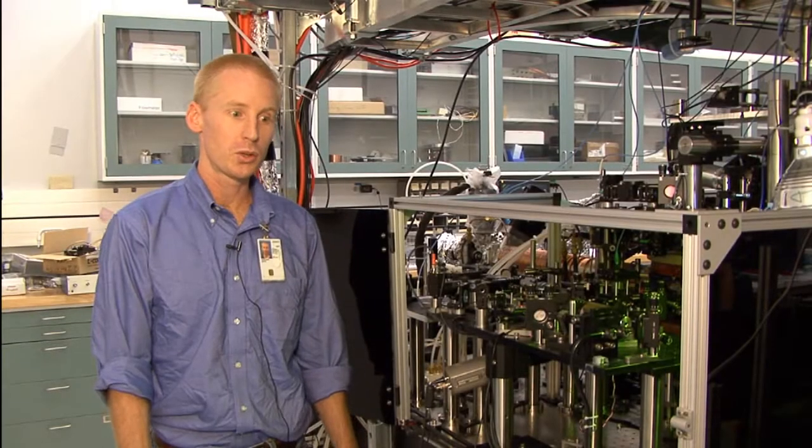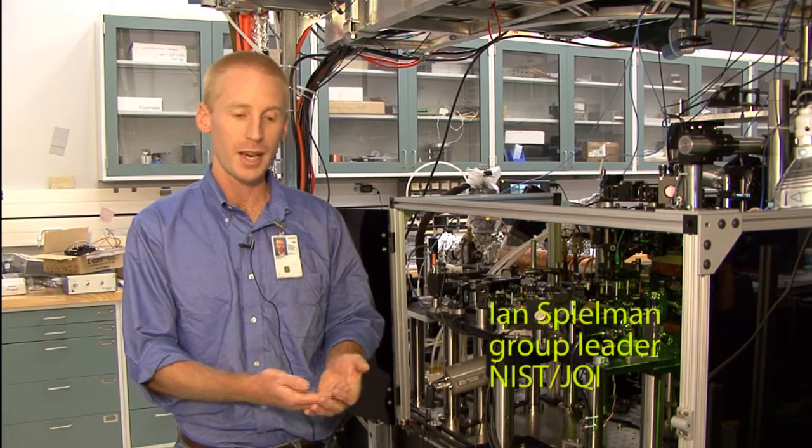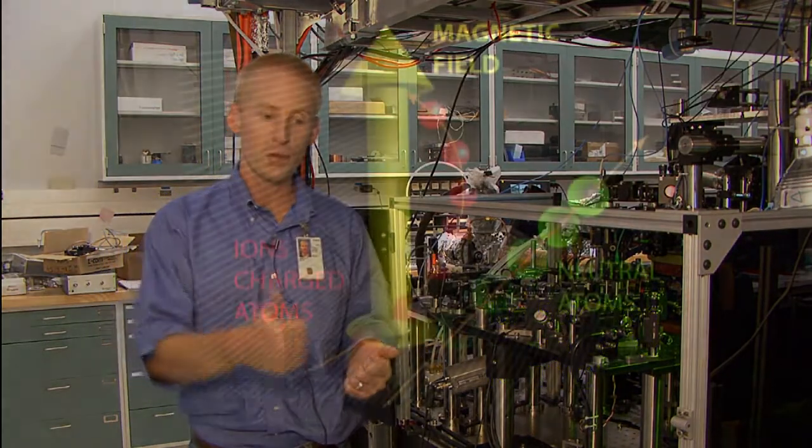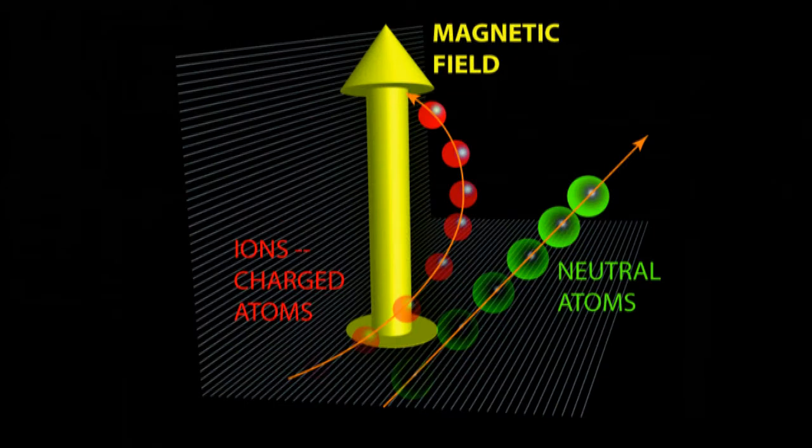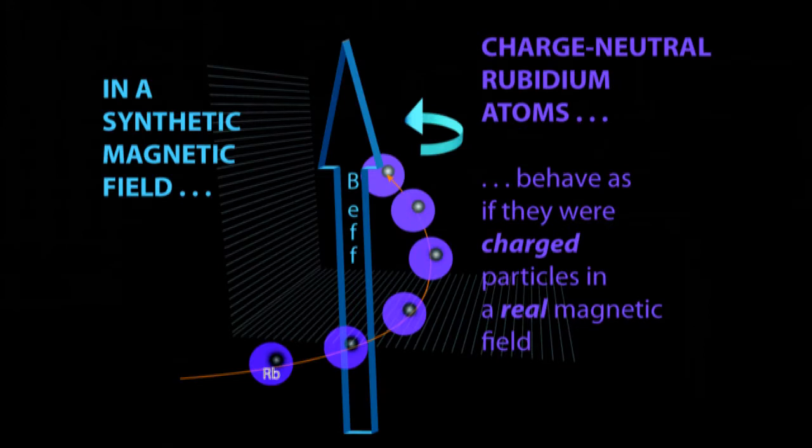What I'd like to tell you about today is how we take charge-neutral atoms—atoms that, unlike ions, would move straight in the presence of a magnetic field and do nothing in the presence of an electric field—and make them behave as if they have a charge, an effective charge.